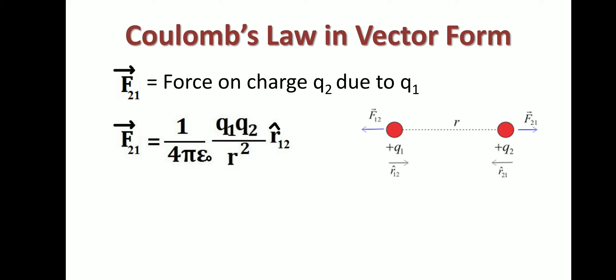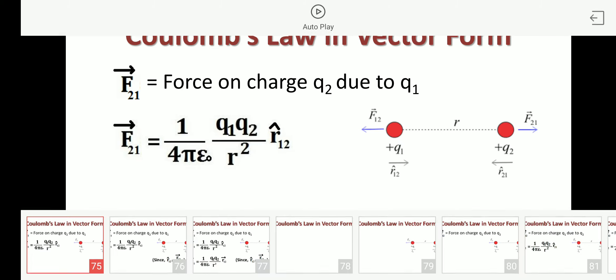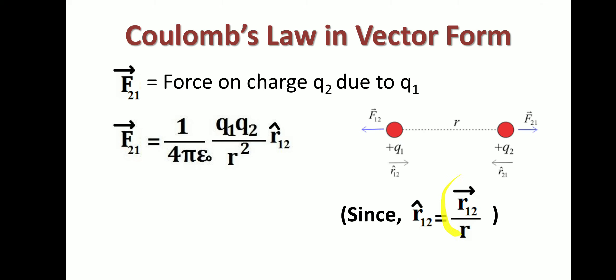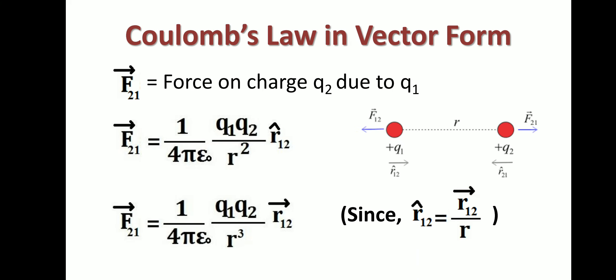Here F₂₁ is in the direction towards the right, and r̂₁₂ is also in the direction towards the right, which is why we use unit vector r̂₁₂ in the expression for F₂₁. The unit vector is the vector divided by its magnitude. Substituting this value gives the complete vector form expression for F₂₁. We can similarly calculate F₁₂.